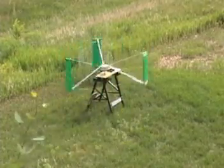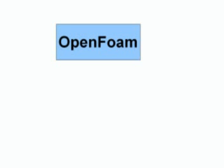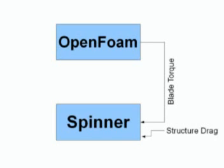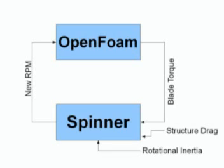In order to explore this, I had to develop some new software tools. I do all of my simulations with a program called OpenFoam, which is only good for simulating things moving at a constant RPM. So I wrote a new program called Spinner. Spinner uses OpenFoam to simulate a few milliseconds of the turbine turning, computes the torque created by the blades, then combines it with the drag of the structure and the rotational inertia of the turbine to produce a modified RPM that is passed back into OpenFoam. The end result is a program that can simulate a turbine starting up from a dead start to whatever it will do.